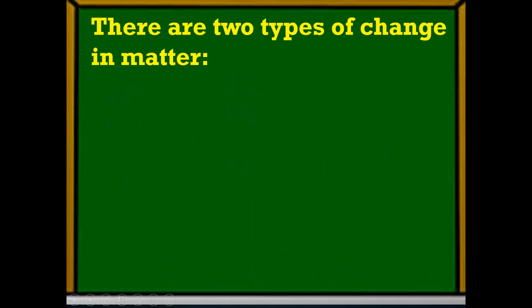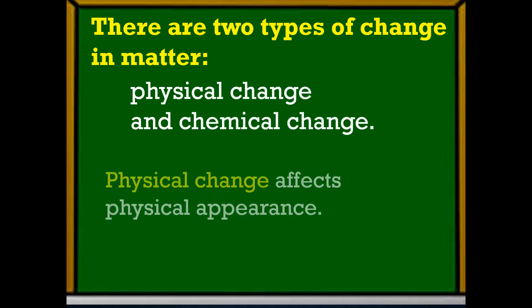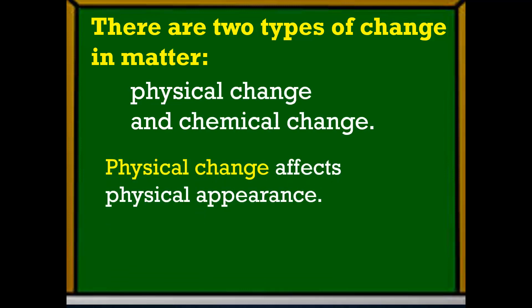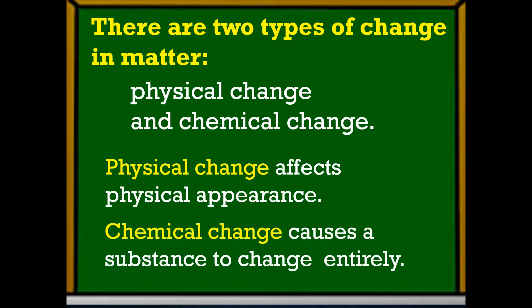So, to sum up, there are two types of change in matter: the physical change and the chemical change. Physical change affects physical appearance, while chemical change causes a substance to change entirely.